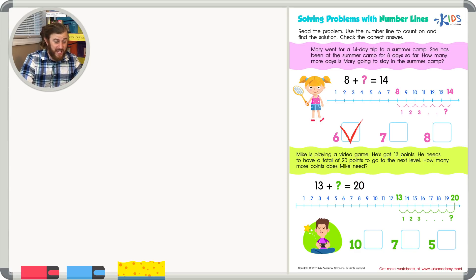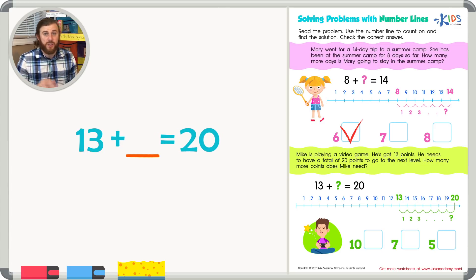Again, we have the number sentence of 13 points that he already has plus an unknown number of points to get to 20 points or our answer so that Mike can get to the next level. We can use our number line and count on starting at 13 all the way to 20. And we'll see how many numbers are in between 13 and 20, which will tell us the missing number.